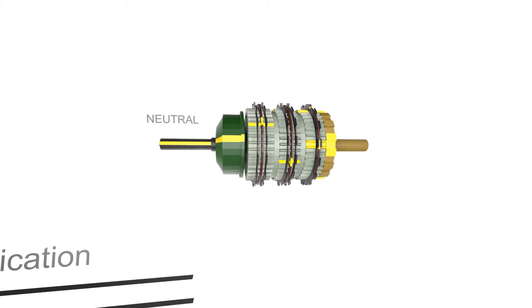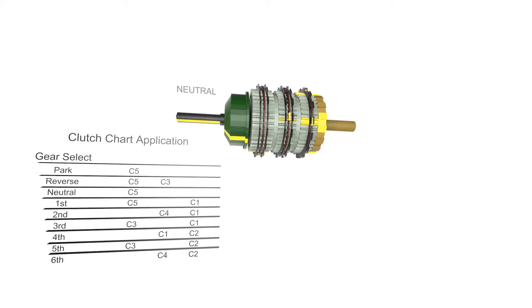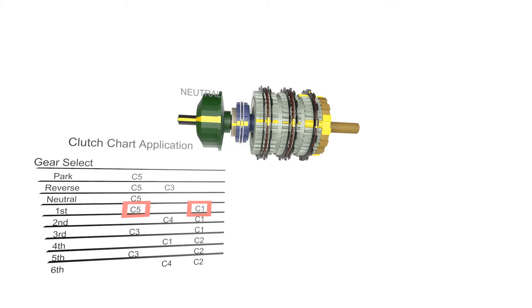Starting from neutral, we now shift to the first gear. Here's the chart for the clutch application. To select gear one, we have to engage C1 and C5. In order to do this, clutch packs are used.